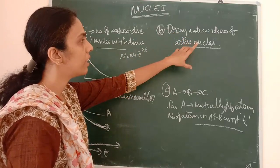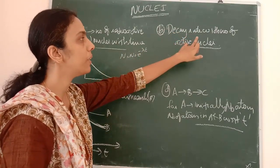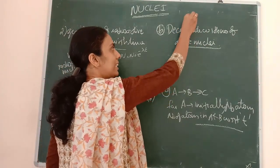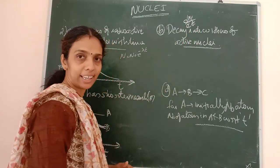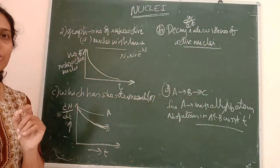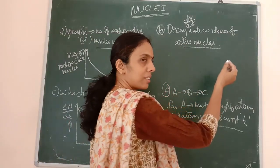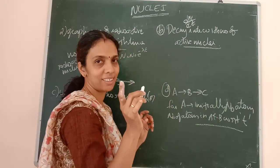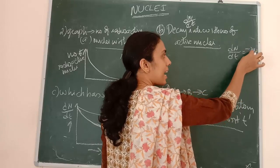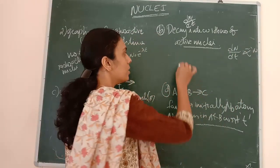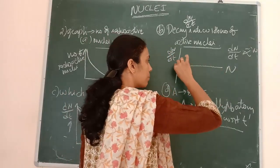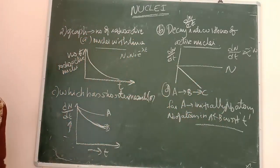Decay rate (dN/dt) with respect to number of active nuclei N: since dN/dt = −λN, it is proportional to −N. So if we plot dN/dt versus N, it will be a straight line in the negative axis — a linear relationship.